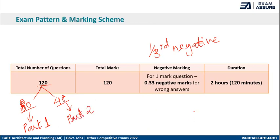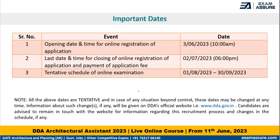The duration of the exam will be 2 hours, that is 120 minutes — one minute per question. As far as the important dates are concerned, the application started on 3rd June 2023, and the last date for application is 2nd July 2023. The tentative exam schedule will be between 1st August and 30th September 2023, with exact dates to be released by DDA accordingly.